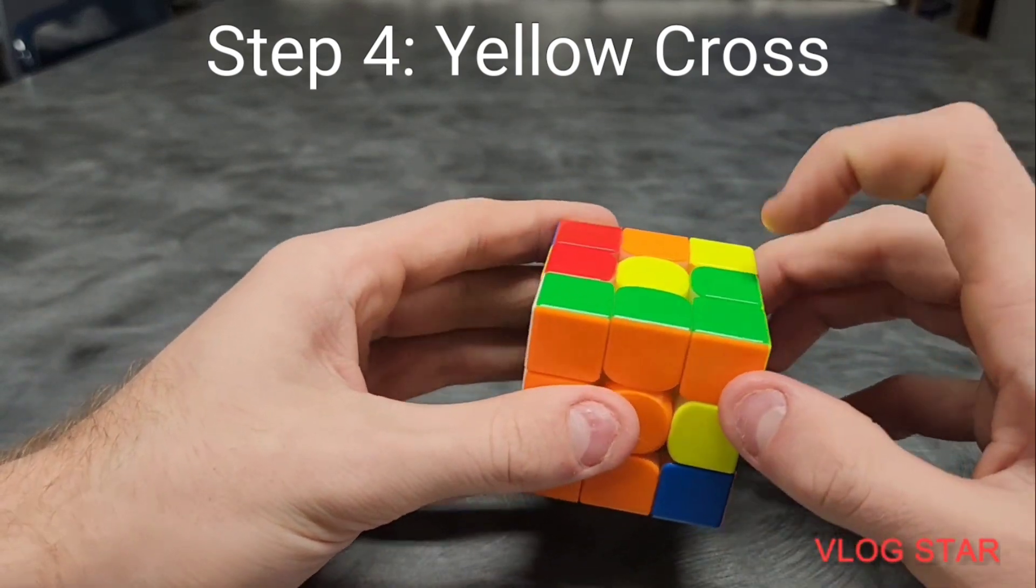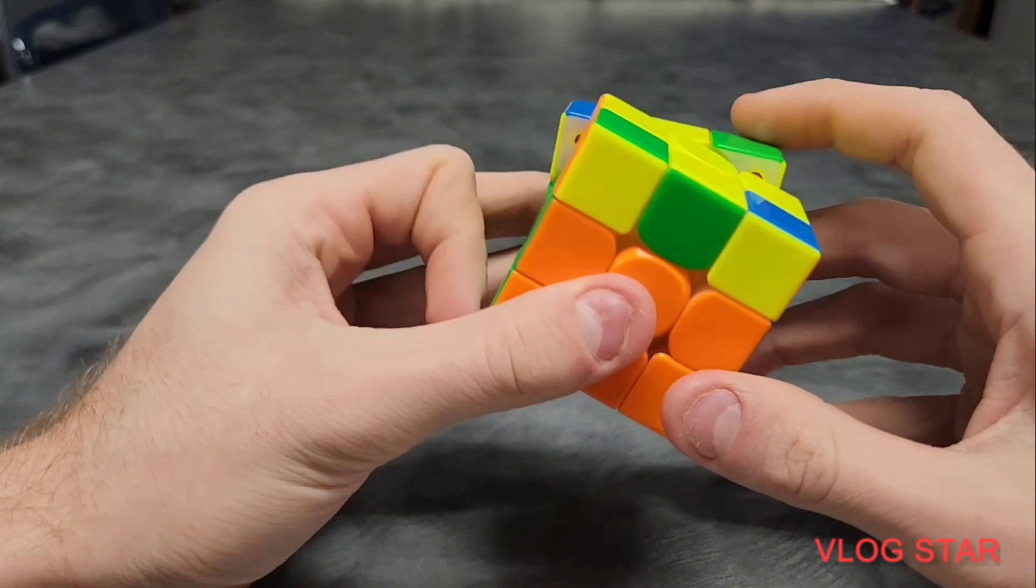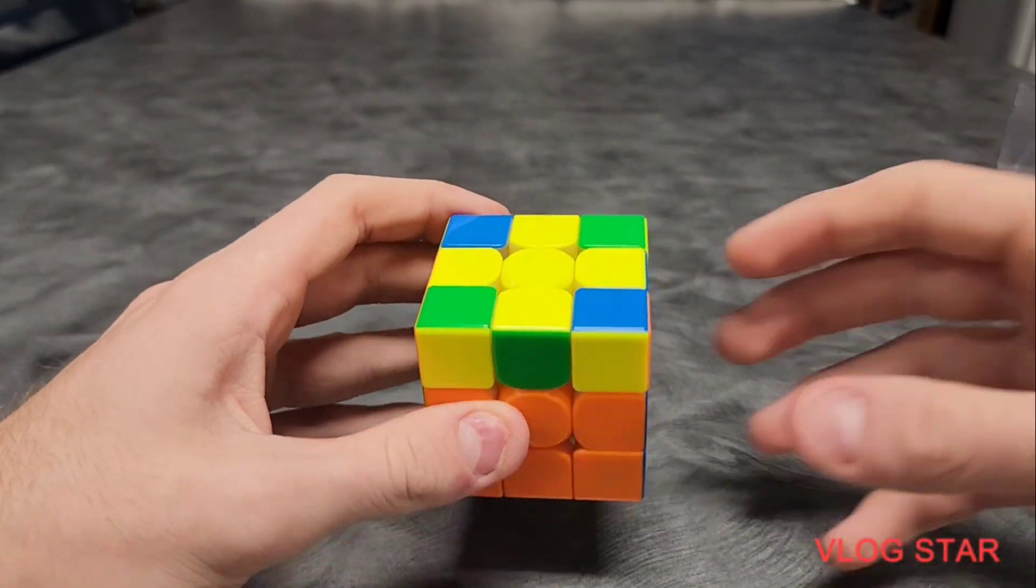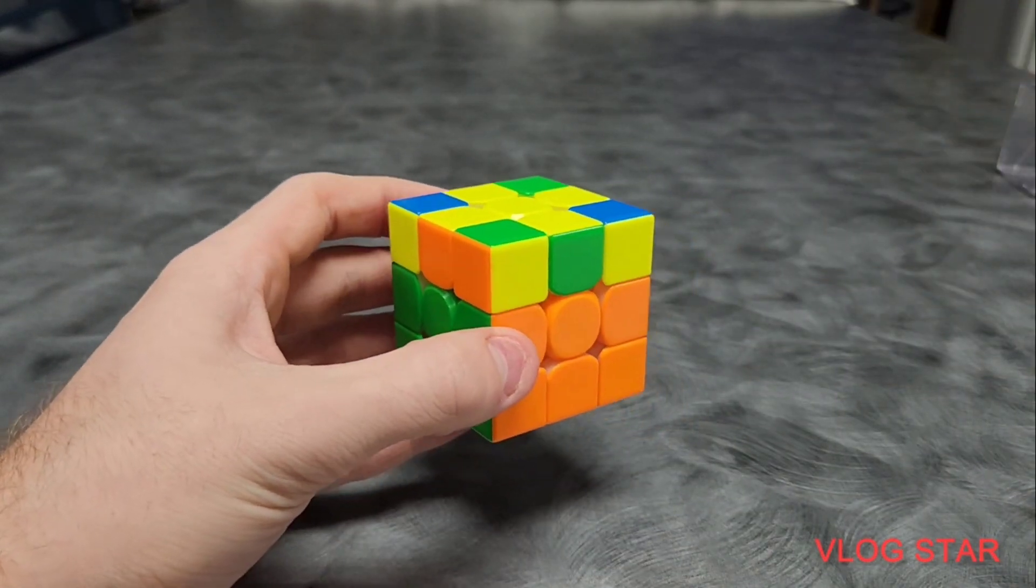Cube's weird. But you use one and then the other. Doesn't matter the order. I like 4 and then 3. Note that unlike the white cross, the edges don't need to match with their respective centers yet. We're going to fix that in the next step.